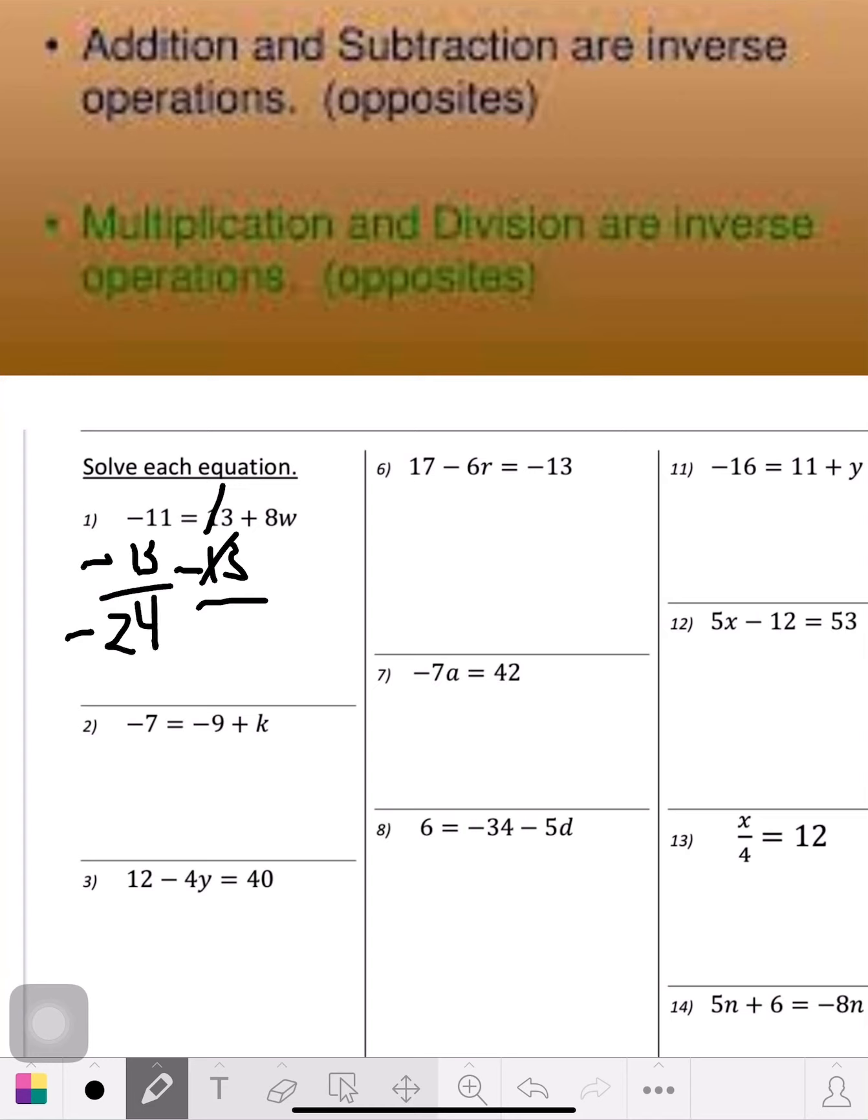Then you bring the 8w down—the 8w comes down. So this negative 24 equals 8w. But as you see, the w isn't alone yet. So what you have is 8 times w. The inverse operation for a multiplication problem is division, so what you want to do is divide both sides by 8.